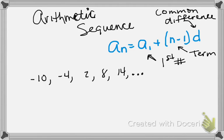So here is an arithmetic sequence. The A1 is our first number, N represents our term, and d is our common difference.